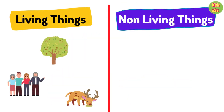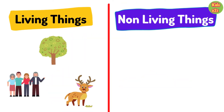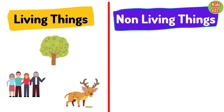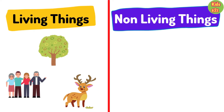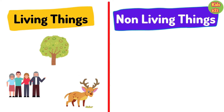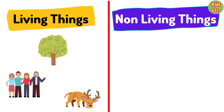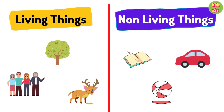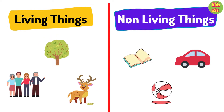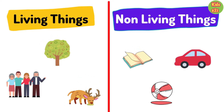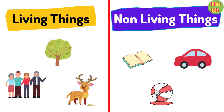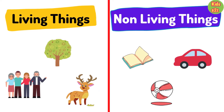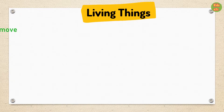Living things are things that are alive. Plants, animals and people are living things. Non-living things are things that are not alive, like a book, a car, a ball, and many more.